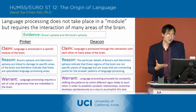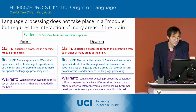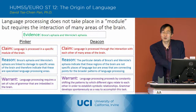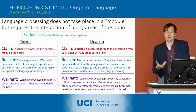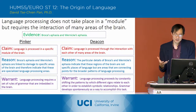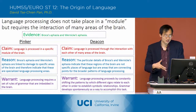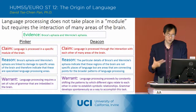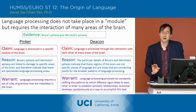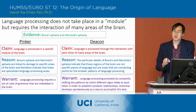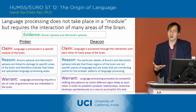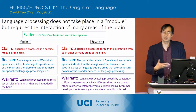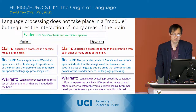For Pinker, those areas are the places where language processing takes place. Pinker's warrant is that language processing requires a set of rules of grammar embedded in the brain. Deacon's warrant is that language processing proceeds by constantly shifting the patterns by which different signs relate to each other in order to establish symbolic relationships. Grammar develops spontaneously as a way to accomplish this task — it's an effect of the requirement for symbolic processing in language, not the cause.